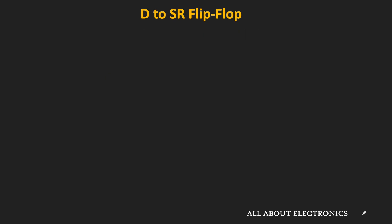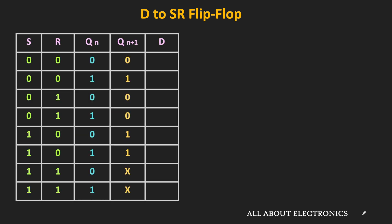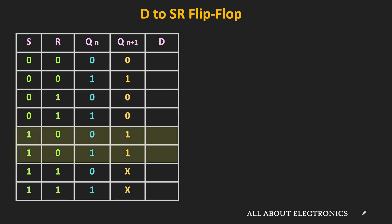Here, since the SR flip-flop is our required flip-flop, first of all let us write down the truth table of the SR flip-flop. When both inputs S and R are 0, the flip-flop will retain its current state. When S is 0 and R is 1, the flip-flop will get reset to 0. When S is 1 and R is 0, then irrespective of the present state, in the next state the output will become 1. And when both S and R inputs are 1, the output of the flip-flop is indeterminate.